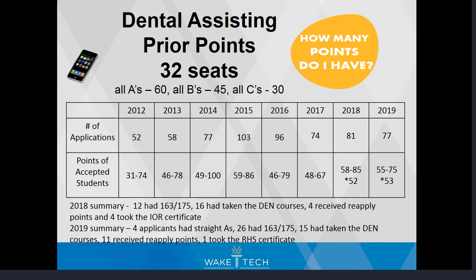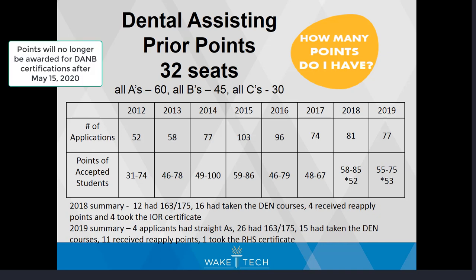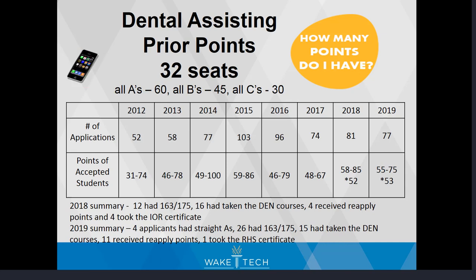For dental assisting prior points, the applicant class of 2018 had 12 students with Bio 163 and 175 — equating to 10 extra points — 16 had taken the DEN courses prior to applying, four received reapplication points, and four took the IOR certificate through the Dental Assisting National Boards. For the class of 2019, four applicants had straight A's, 26 had taken BIO 163 and 175, 15 had taken the DEN courses, 11 received reapply points, and one took the RHS certificate. Try to aim within the given point ranges to be a competitive applicant.